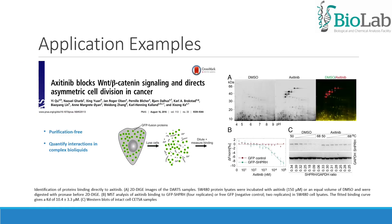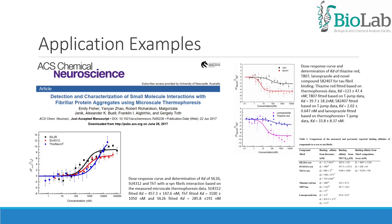The wingless beta-catenin signaling pathway is an attractive target for cancer therapy; however, non-wingless inhibitors are still far from clinical use. The authors reported that the clinically approved drug axitinib strongly inhibits the wingless beta-catenin signaling pathway in vitro and in vivo. MST was used to study binding directly in cell lysates, proving that this technique is capable of quantifying interactions in complex bioliquids.